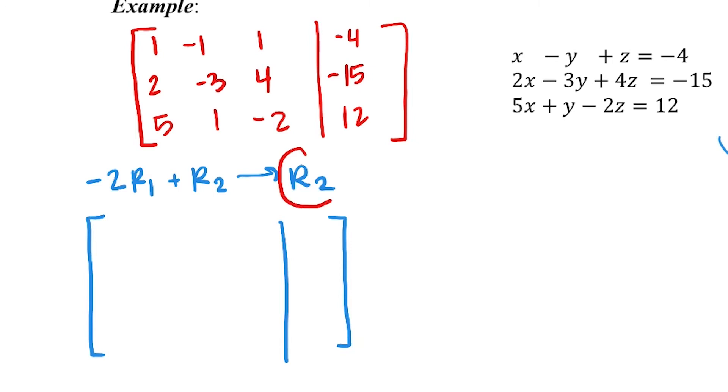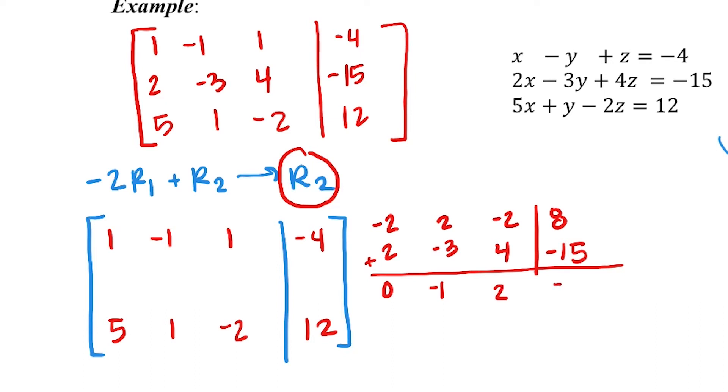So if I'm changing row 2, row 1 and row 3 are staying the same. So I'm going to do this math off to the side. Negative 2 times the first row will be -2, positive 2, -2, 8, that we are adding with 2, -3, 4, -15. So my new second row is going to be 0, -1, 2, -7. So 0, -1, 2, -7.